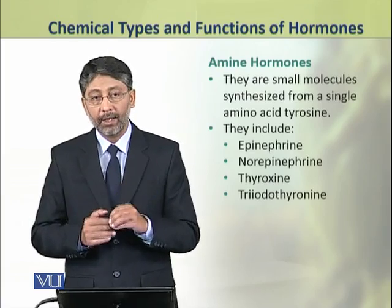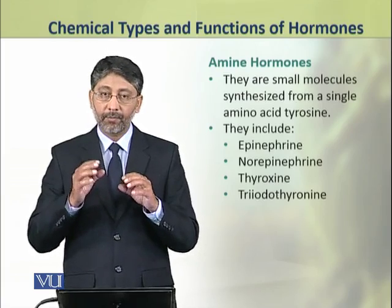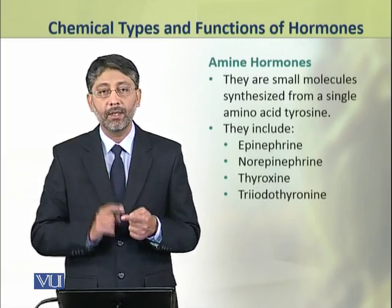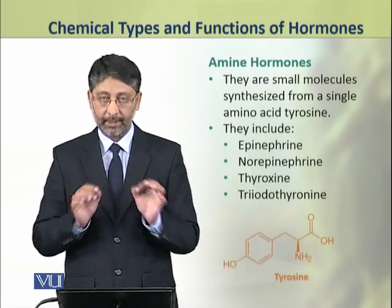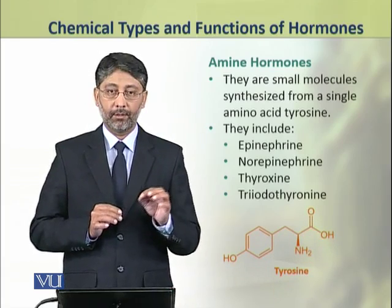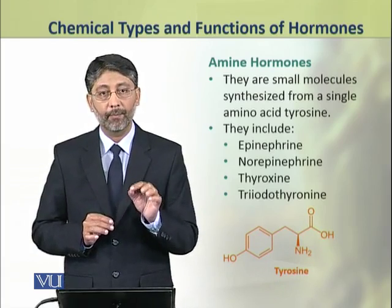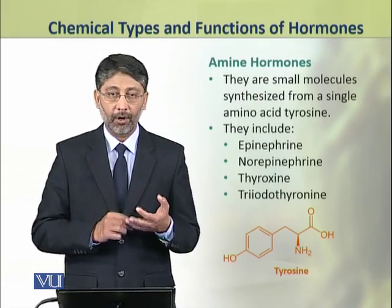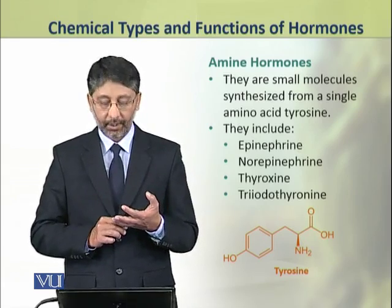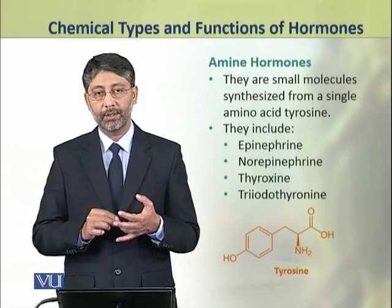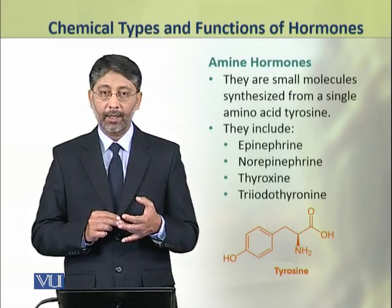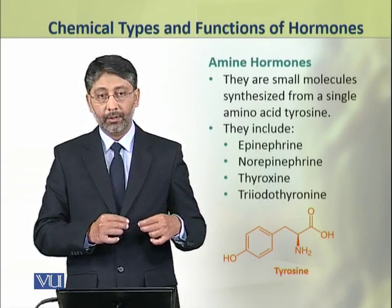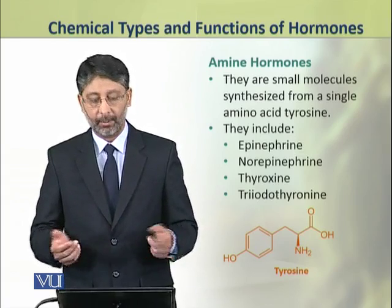Amine hormones are small molecules which are synthesized from a single amino acid, tyrosine. The hormones derived from tyrosine include epinephrine, norepinephrine, thyroxine, and triiodothyronine. Simply, we can say that the thyroid gland and adrenal gland — specifically the adrenal medulla — produce amine hormones.